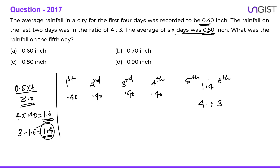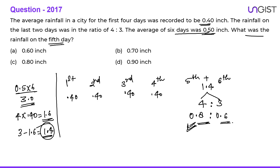The sum of the 5th and 6th day is 1.4 inches, distributed in the ratio 4:3. Dividing 1.4 in ratio 4:3 gives 0.8 and 0.6. So on the 5th day, 0.8 inches of rainfall was recorded, and on the 6th day, 0.6 inches. The question asks for the rainfall on the 5th day, which is 0.8 inches. Option C is the correct choice.